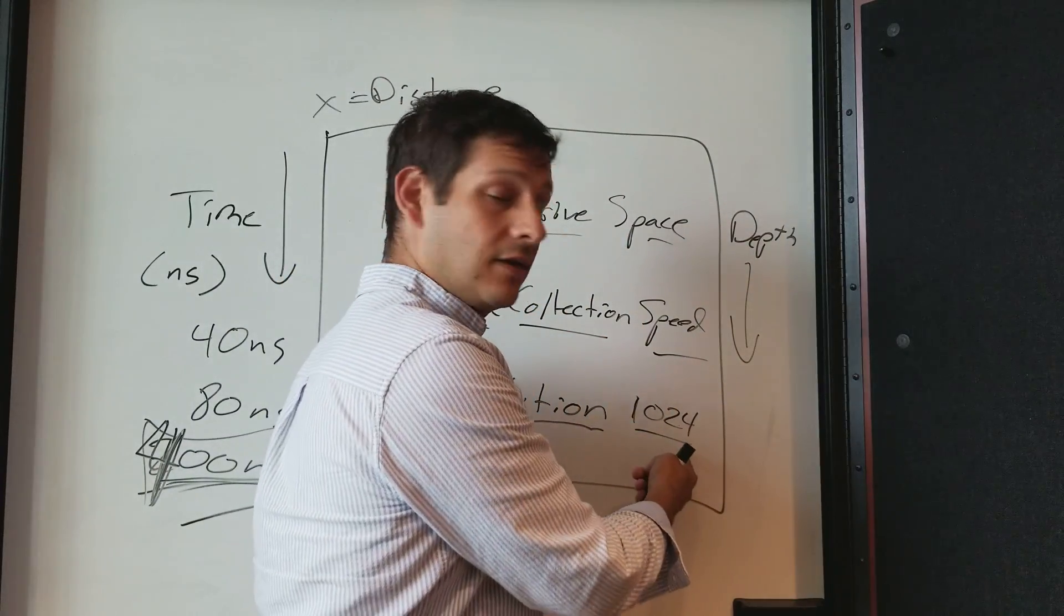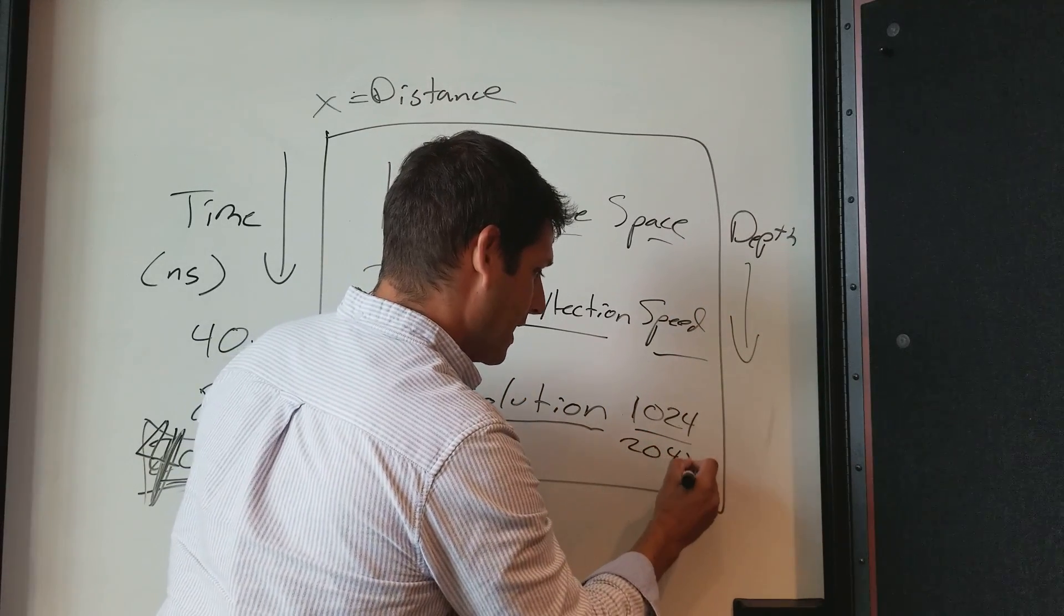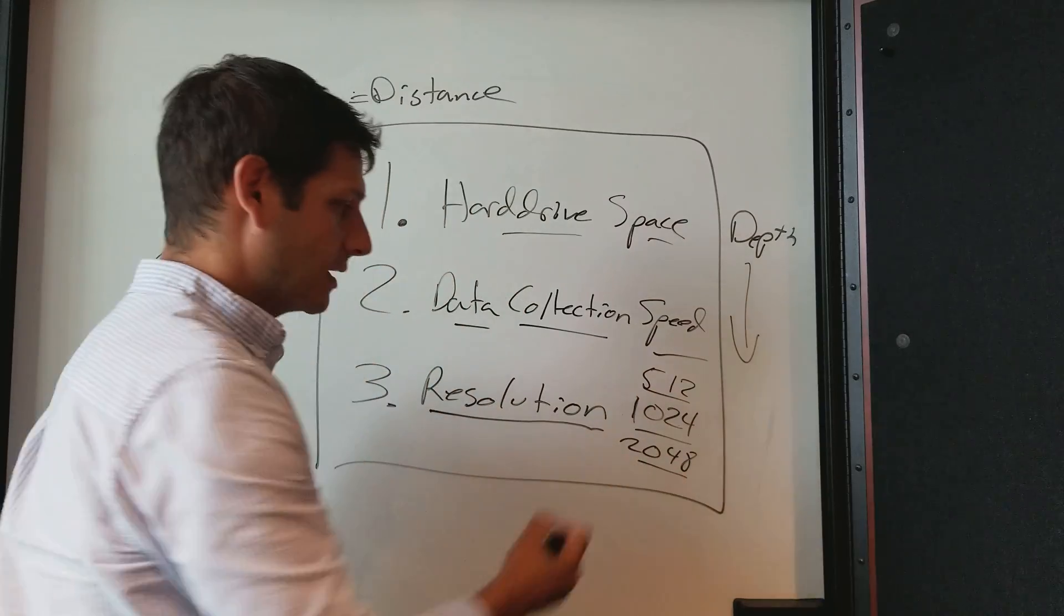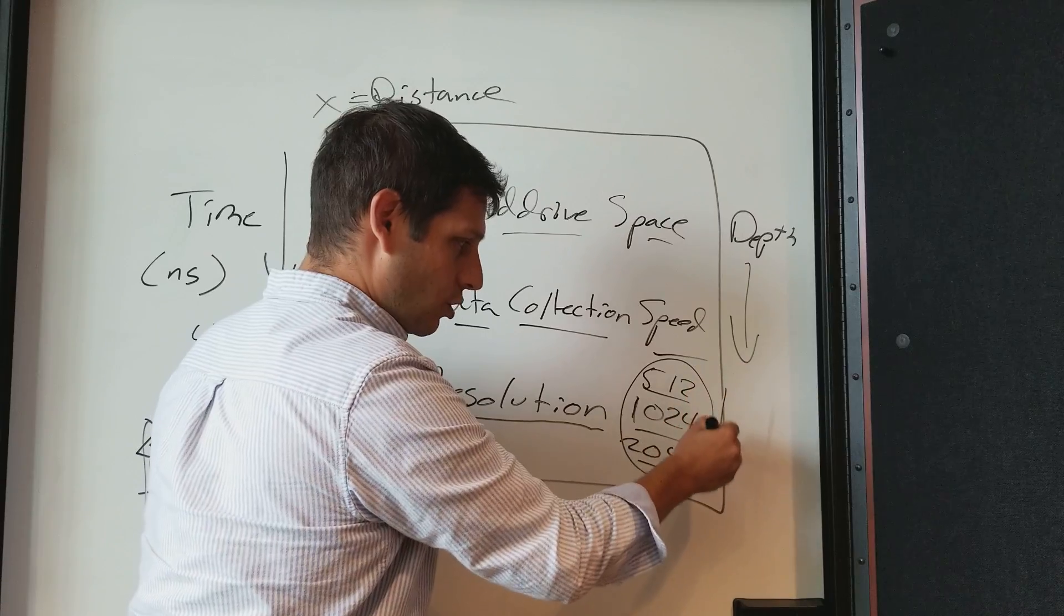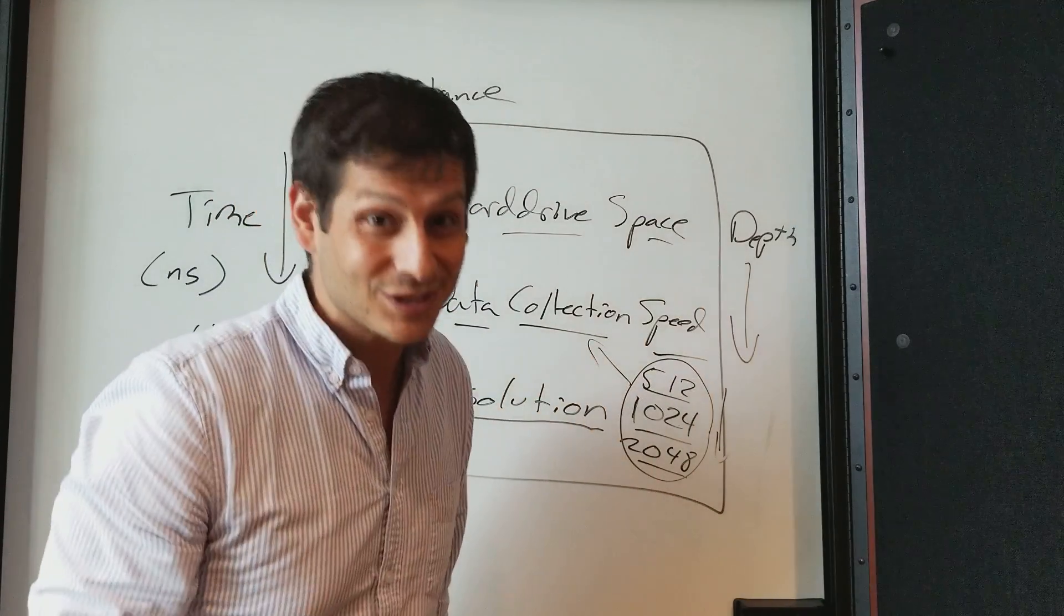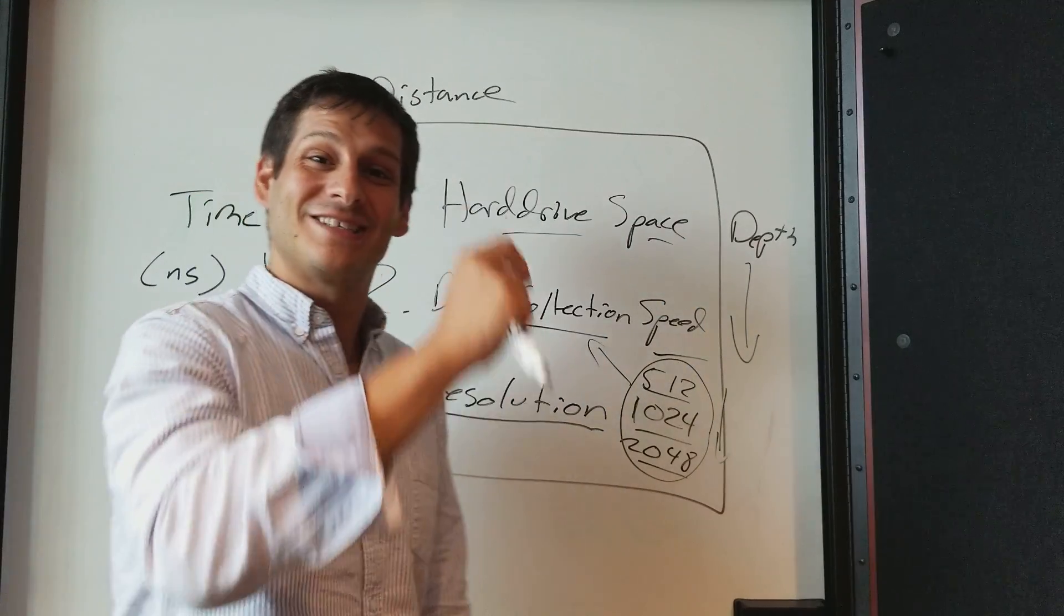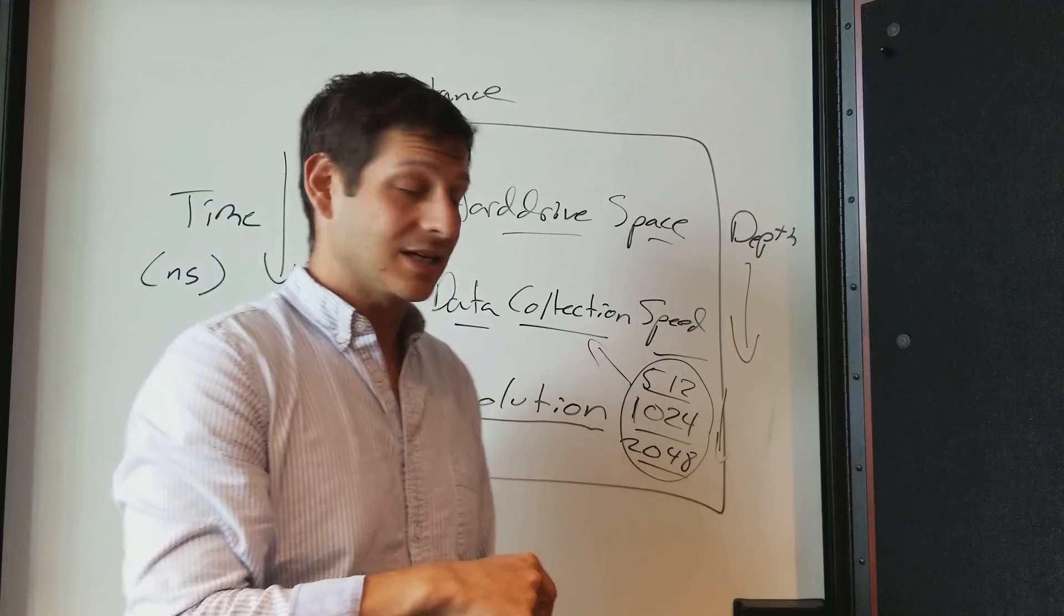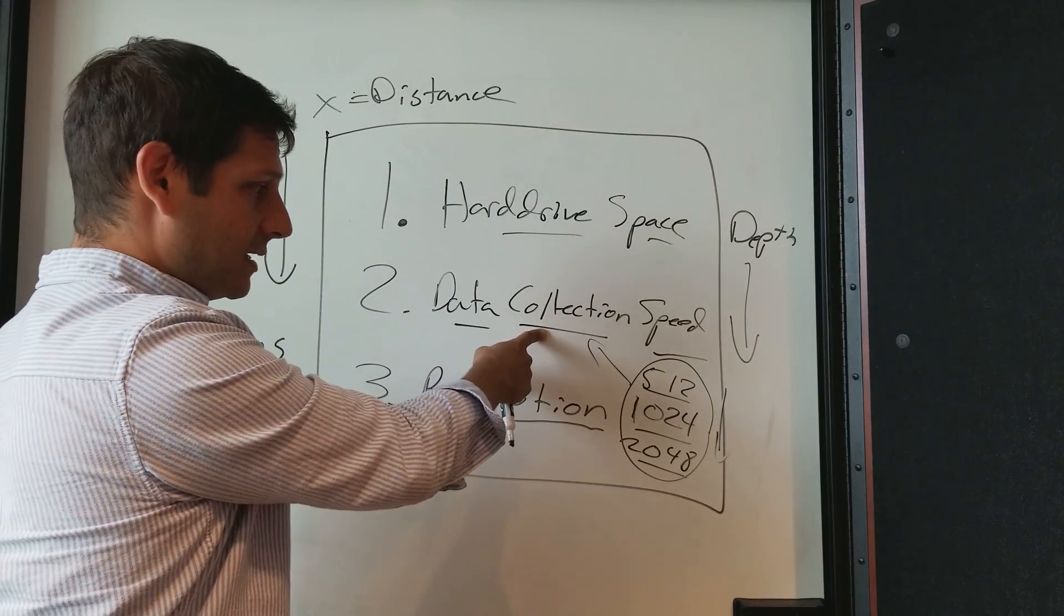However, in order to get 1024, or even 2048, these are all typical, what becomes your problem then? As you go with more points, data collection speed is going to suffer, because the density of your points, the ability for your machine to take those points and digitize them means it's going to have a slower process.